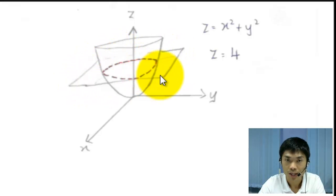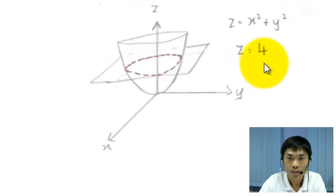And it is being cut across by a plane of z equals 4. So how are you going to find out the intersection curve of these two 3D surfaces? Well, it's pretty straightforward. We just need to substitute the z equals 4, the plane of z equals 4, into the equation of the elliptic paraboloid.